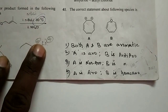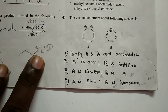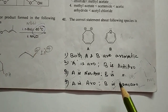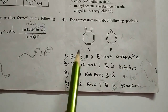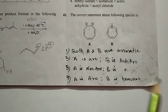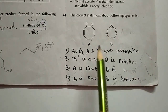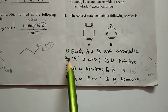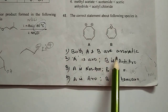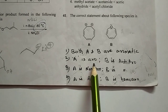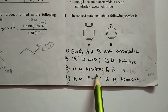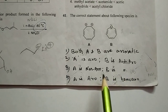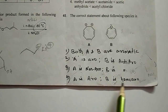This is a CSIR question. The correct statement about the following species — here is a dication and here is a cyclic ether. The options are: both A and B are aromatic; A is aromatic, B is anti-aromatic; A is non-aromatic, B is anti-aromatic; and A is aromatic, B is homo-aromatic.